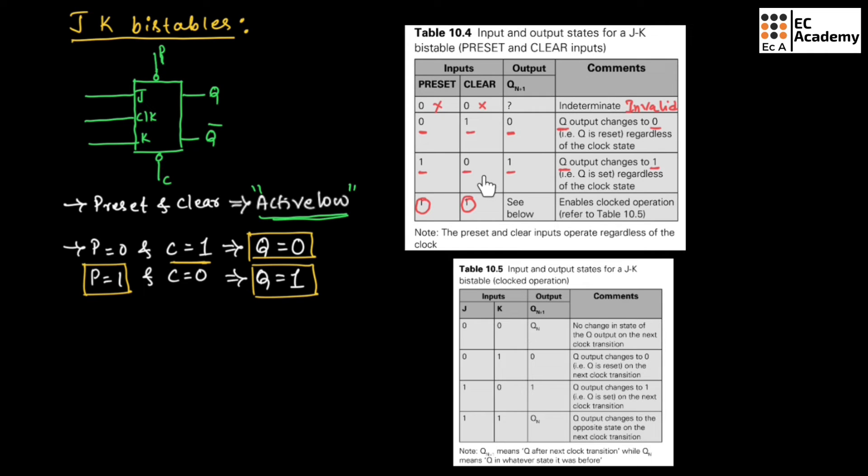If we apply preset as different values like 0, 0, 0, 1 and 1, 0, these are the output which we get. And once we apply preset as 1, 1, we can apply input for J and K. Now, when J is 0 and K is 0, output will be Qn.